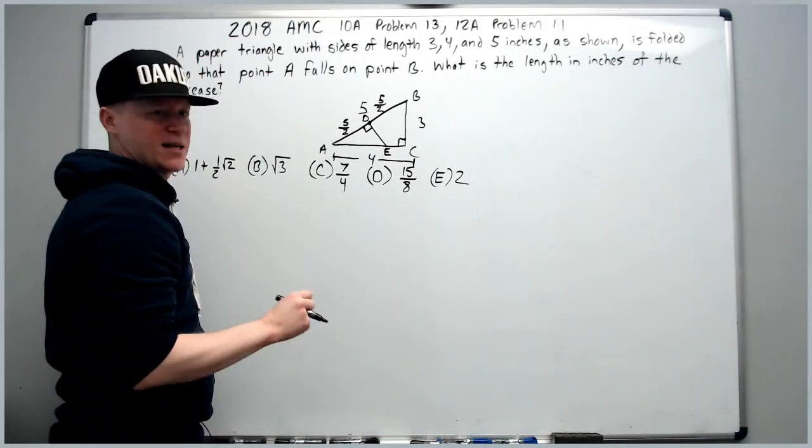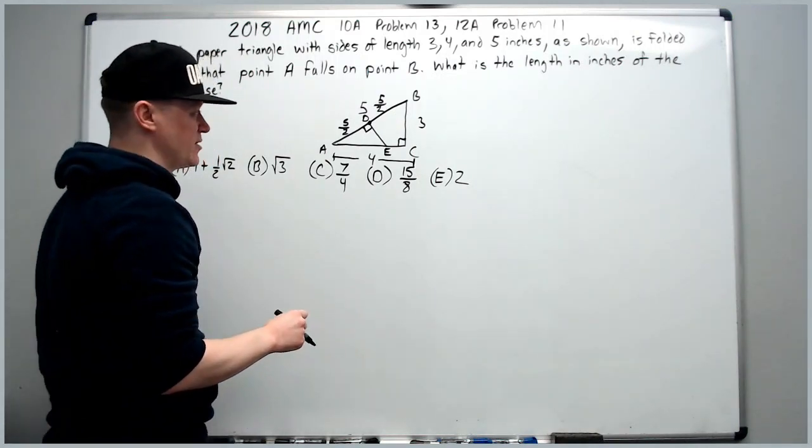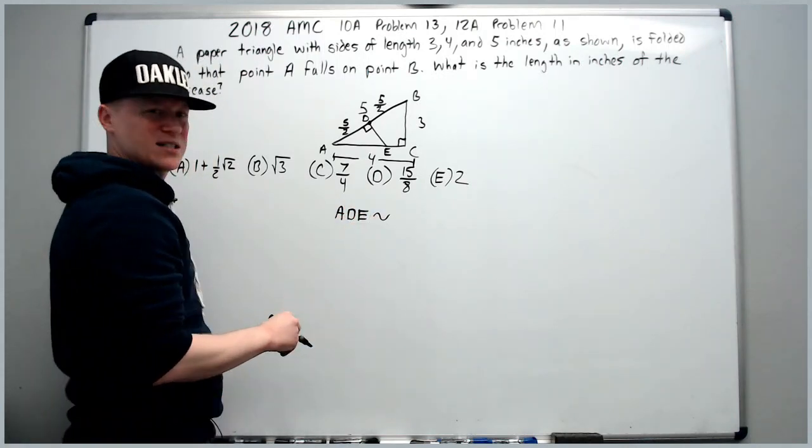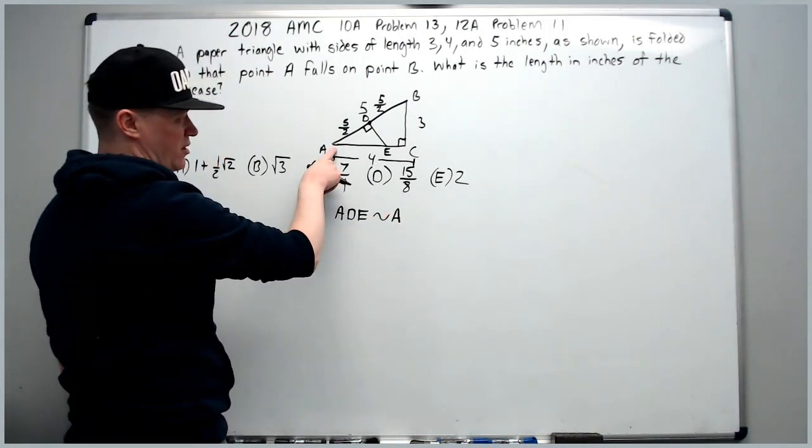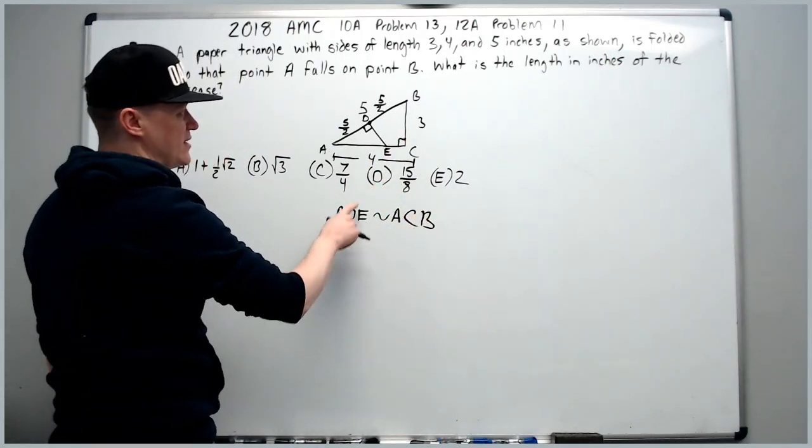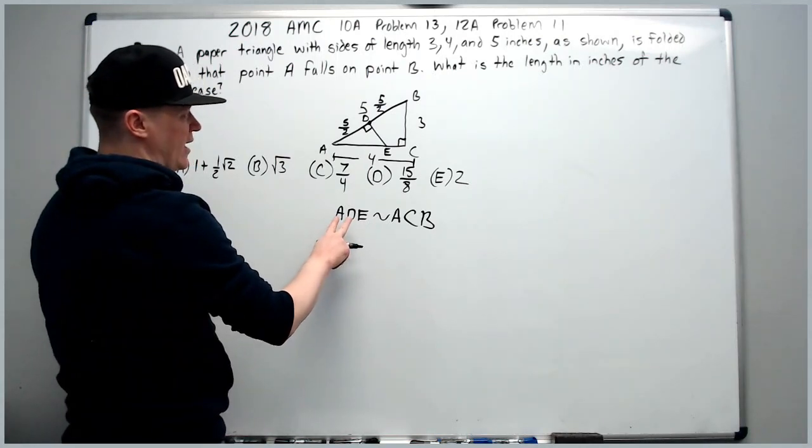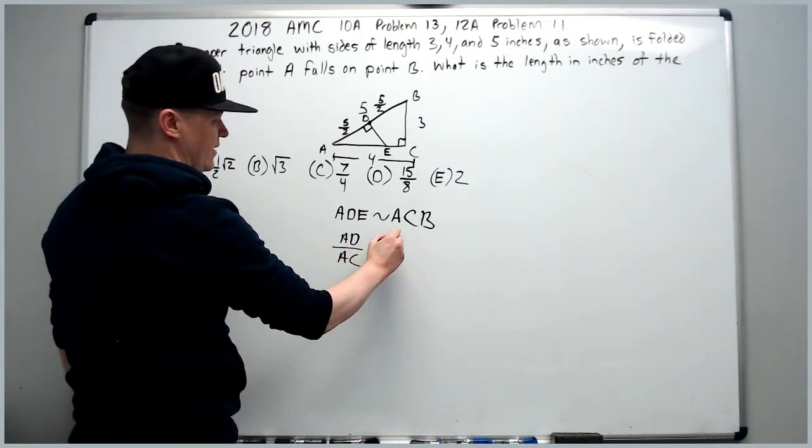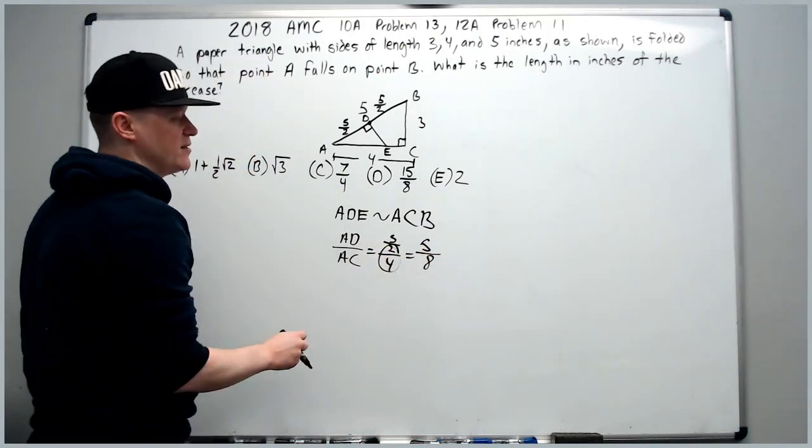Similar triangles is a must-know on the test. It comes up way too often, like once every year or two years at most. So we're going to write A, D, E. I like to write the similarity. It doesn't take that much time and it makes sure you're not going to make a simple mistake. The next triangle also has to start with A, but C will be the second letter and B the last, so that the D and C 90 degree angles match by A similarity. So now we're going to do AD, which we know, over AC, which we know. That is 5 halves over 4, which is 5 eighths.